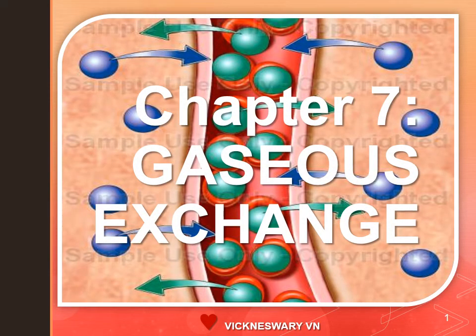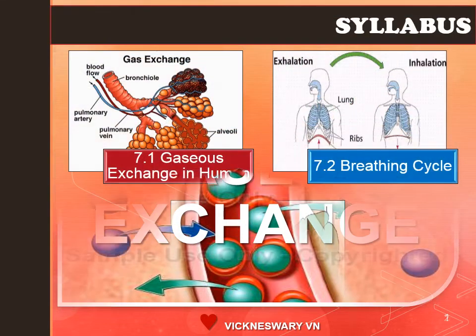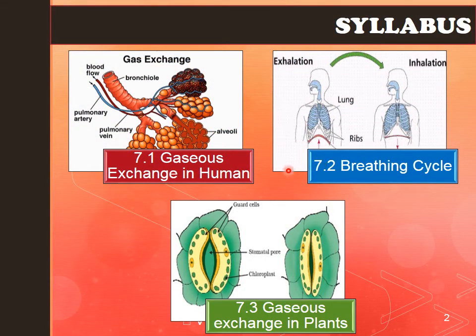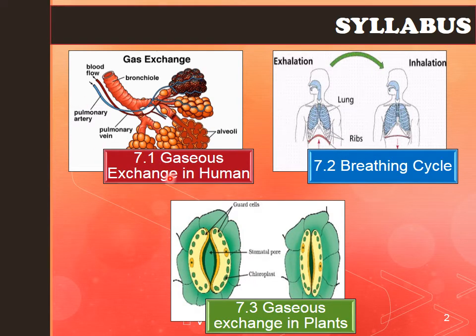This is Chapter 7, Gaseous Exchange. In the STPM syllabus, gaseous exchange is divided into three parts: 7.1 gaseous exchange in humans, 7.2 the breathing cycle, and 7.3 gaseous exchange in plants. To start off this chapter, we will begin with 7.1, gaseous exchange in humans. Let's have a look at the detailed syllabus of 7.1.